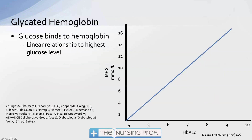This diagram illustrates the relationship between our hemoglobin A1c and the glucose level. As the glucose level goes up, the hemoglobin A1c level goes up — there's that linear relationship.